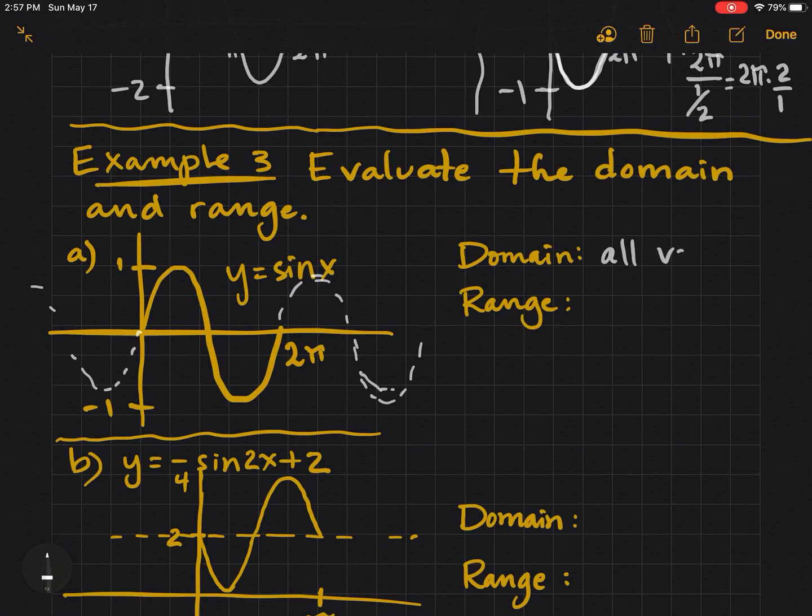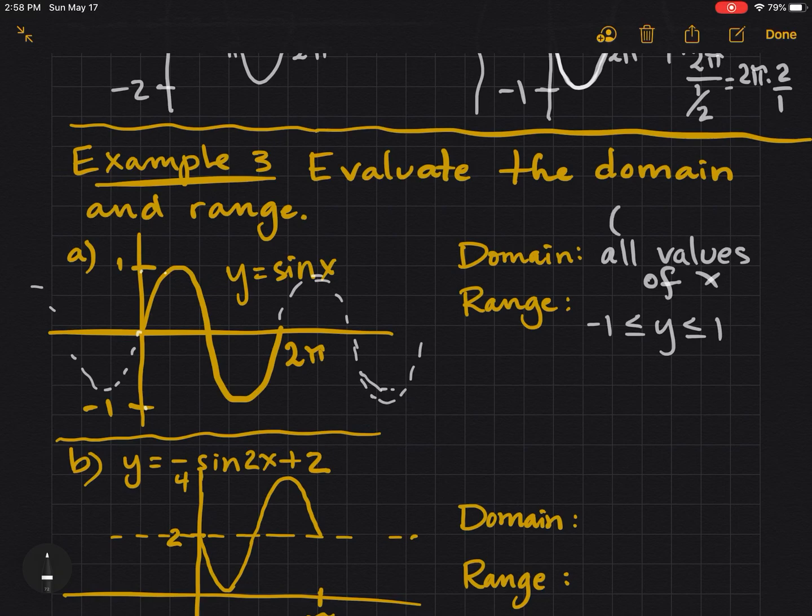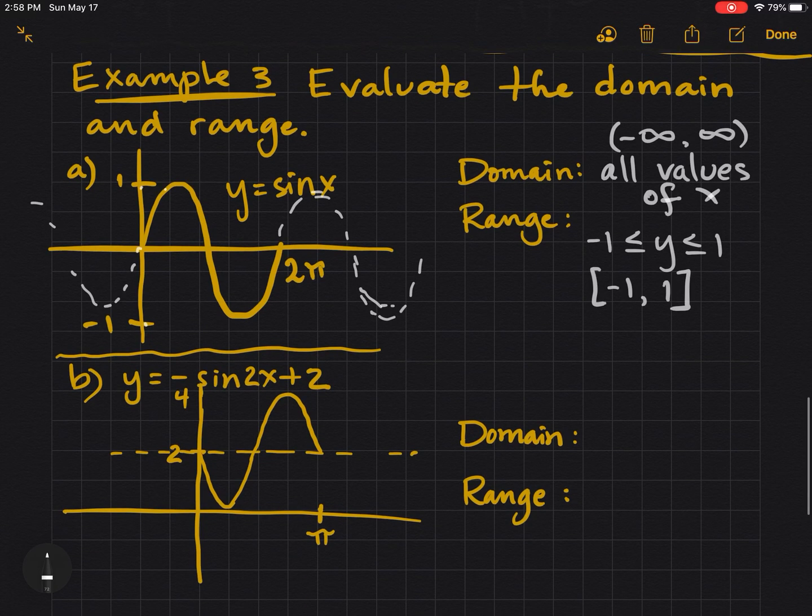So, if we ask ourselves the domain, all values of x, x goes forever. Now, the range, we're looking to see what's going on with the y values. This graph only exists from negative 1 to positive 1. Negative 1 to positive 1, including those values. Now, if we were using interval notation for the domain, that would be negative infinity to positive infinity. And if we were doing the range, we would use a closed bracket because it's equal from negative 1 to positive 1. You'll learn more about that in pre-calculus.